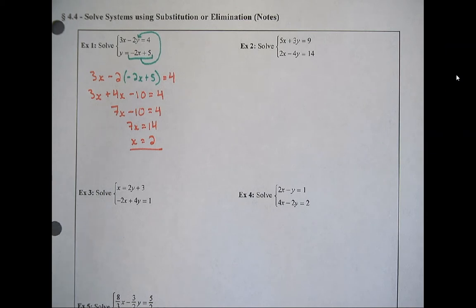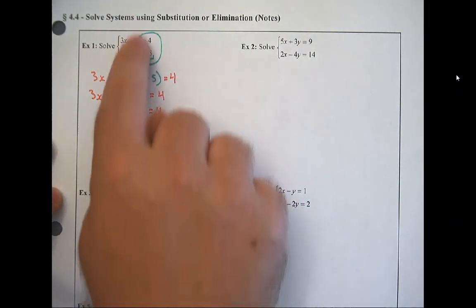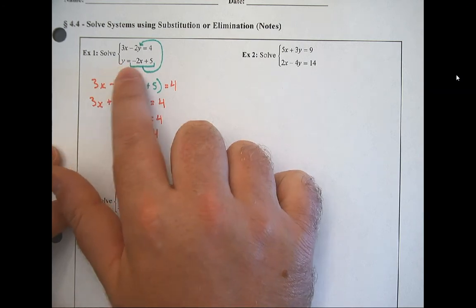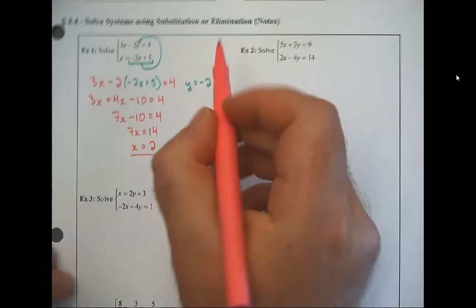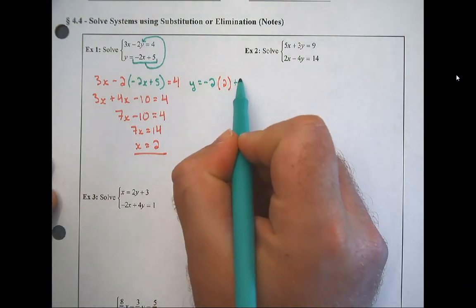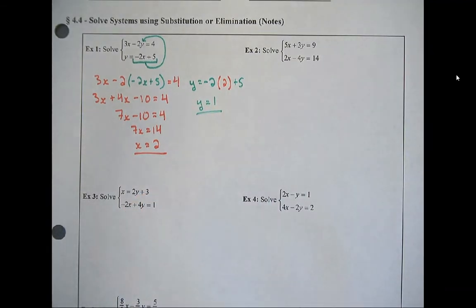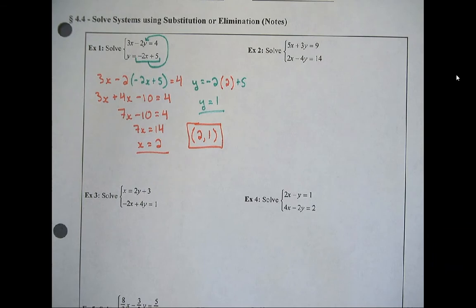Now I take the x value and plug it back in. I'll plug it into the y equals equation since y is already solved for. So y equals negative 2 times 2 plus 5, which is negative 4 plus 5, which is positive 1. I underline that too. Now we take those two answers together and write our overall solution as (2, 1) — always listed in alphabetical order, x before y.